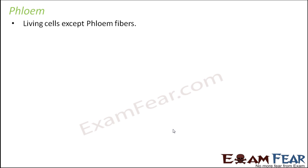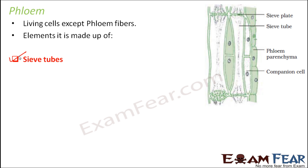Now let us look at phloem. Phloem cells are living cells — unlike xylem where all cells are dead, phloem cells are all living except phloem fibers. The elements of phloem include sieve tubes, which are tubular cells with perforated walls — their walls have holes or tiny pores. Through these pores, sieve tubes communicate with other sieve tubes or cells, and that is how they help in transportation of food.